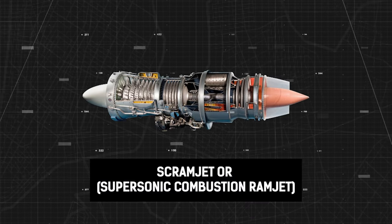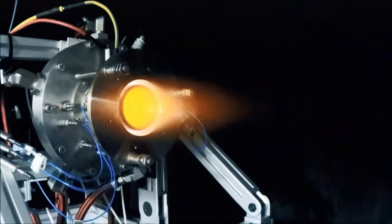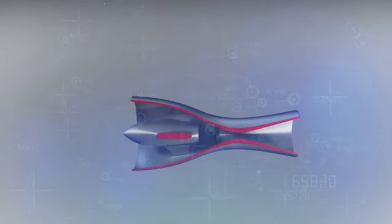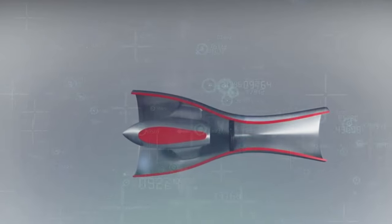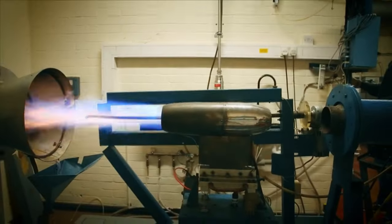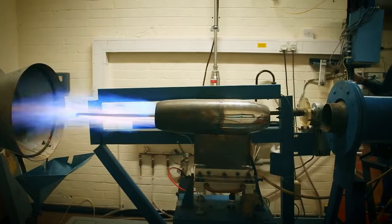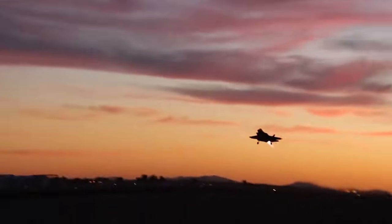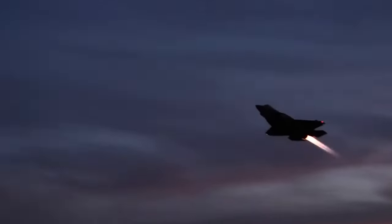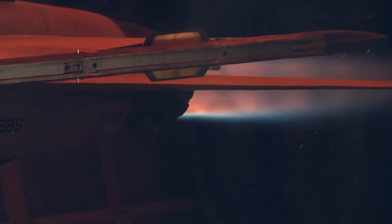Scramjet, or supersonic combustion ramjet: Think of a scramjet like a ramjet's cooler older brother. A ramjet has something called an inlet cone that slows down the air before it enters the combustion chamber. But a scramjet doesn't have that cone. It lets the air pass through at supersonic speeds. This allows for faster flight, but it's like trying to light a match in a hurricane. Ramjets and scramjets can't operate at lower speeds for taking off and landing. This is one of the reasons why today's hypersonics are not reusable.